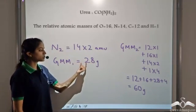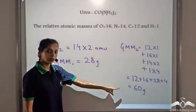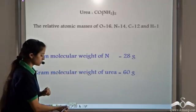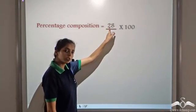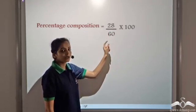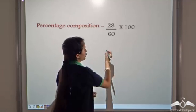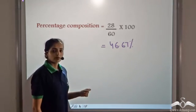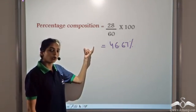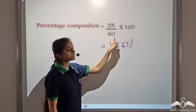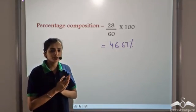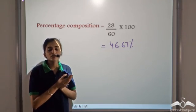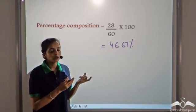Now we calculate the percentage composition of nitrogen in urea. We take the gram molecular mass of nitrogen, which is 28 grams, divided by the gram molecular mass of urea, which is 60 grams, and multiply by 100. On calculating, we get 46.67 percent. So to calculate the percentage composition of any species, we calculate the gram molecular mass of that species in one molecule, divide it by the gram molecular mass of the total compound, and multiply by 100.